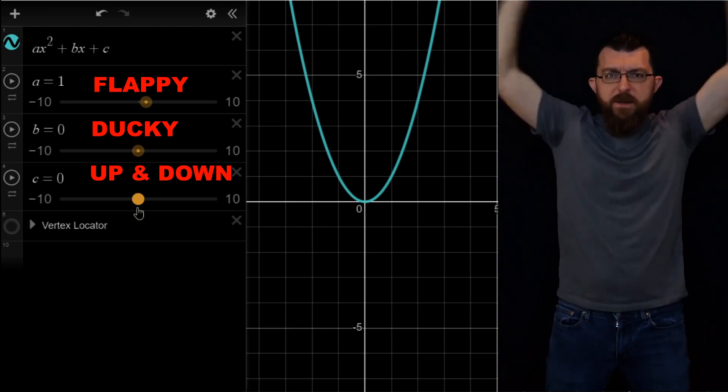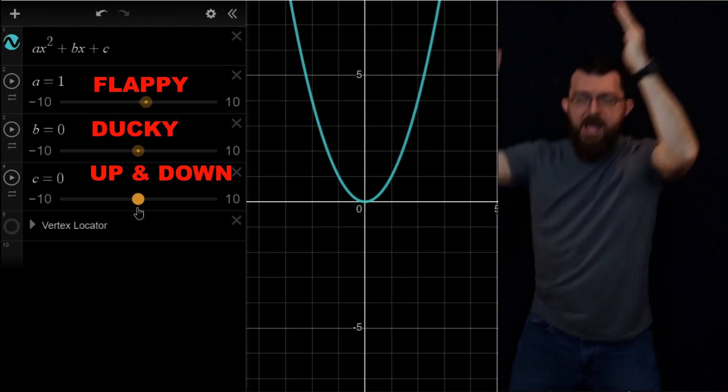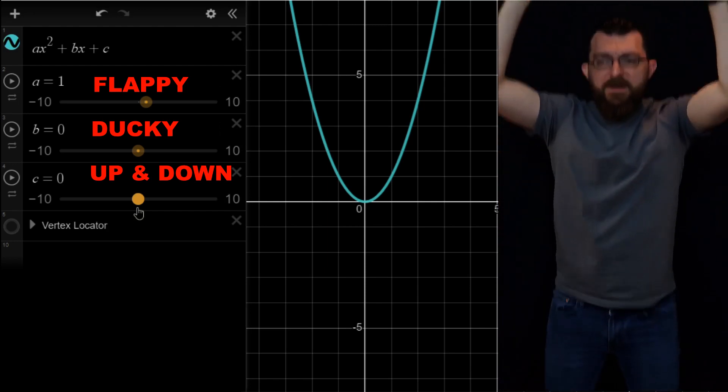A is making it flap. B is making it duck side to side. And c is making it go up and down, up and down.